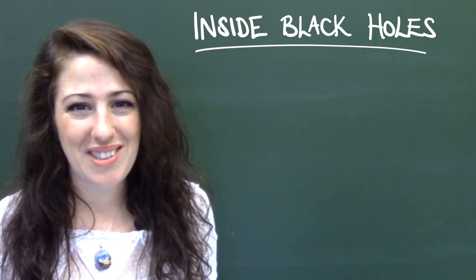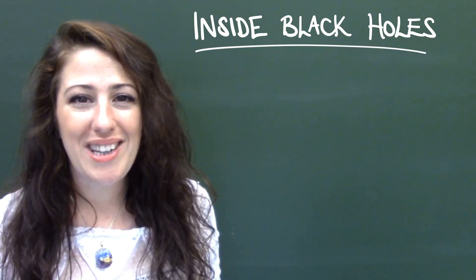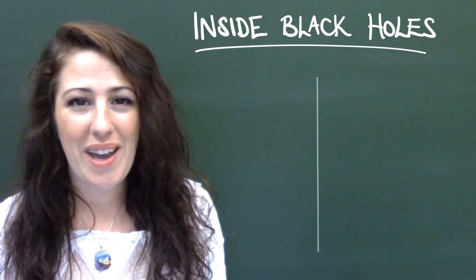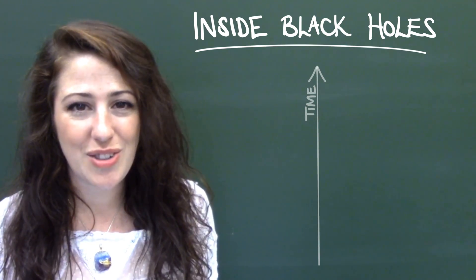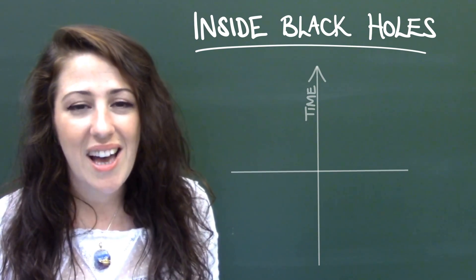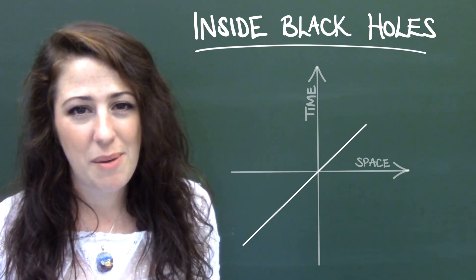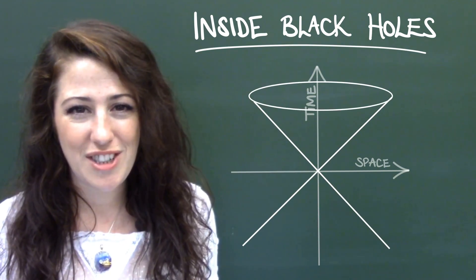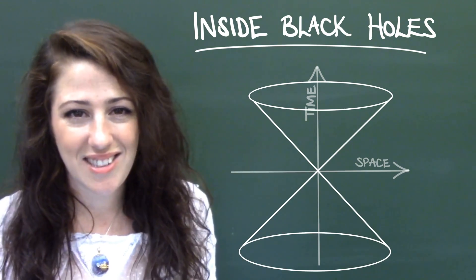To understand what's inside a black hole, we need to draw a light cone. On the vertical axis we have time and the horizontal we have space. As light travels at the speed limit of the universe and it's a constant, it creates a natural division between space and time.